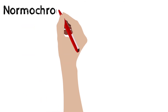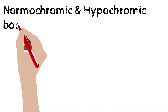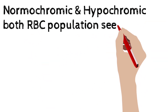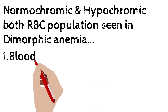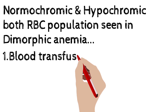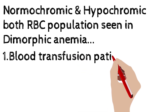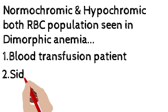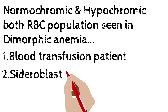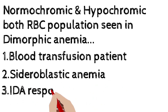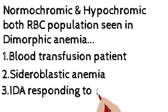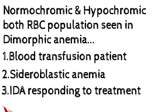In spherocytes there will be no pallor, which is known as spherocytosis. Now, if you have both normochromic and hypochromic red blood cell populations, it is known as dimorphic anemia. The causes of dimorphic anemia are: blood transfusion, sideroblastic anemia, iron deficiency anemia patients who respond to treatment, and myelodysplastic syndrome like myeloproliferative neoplasm.